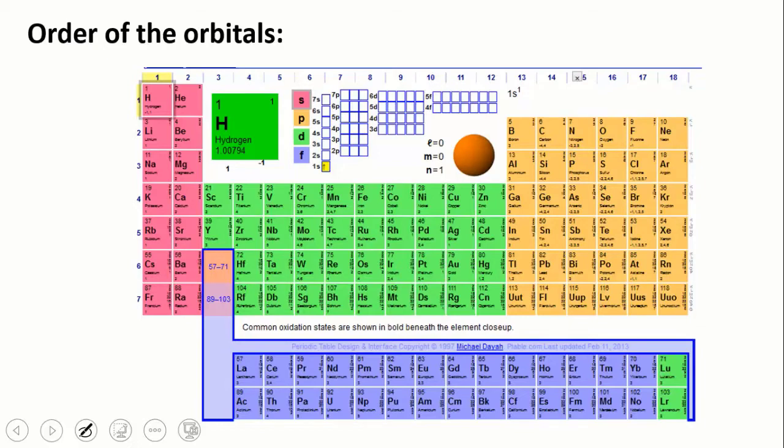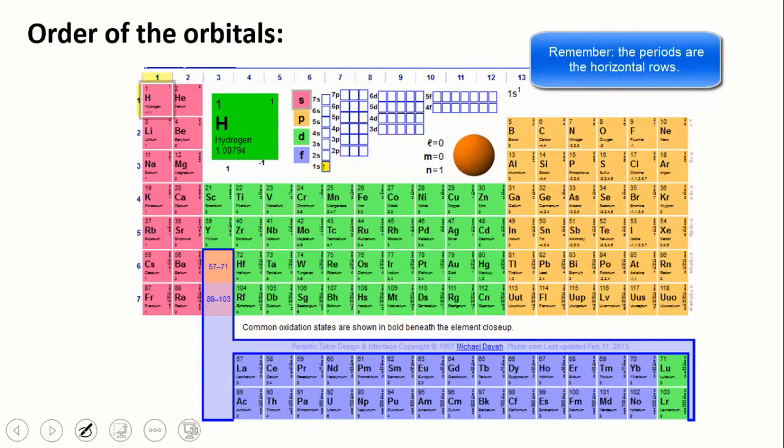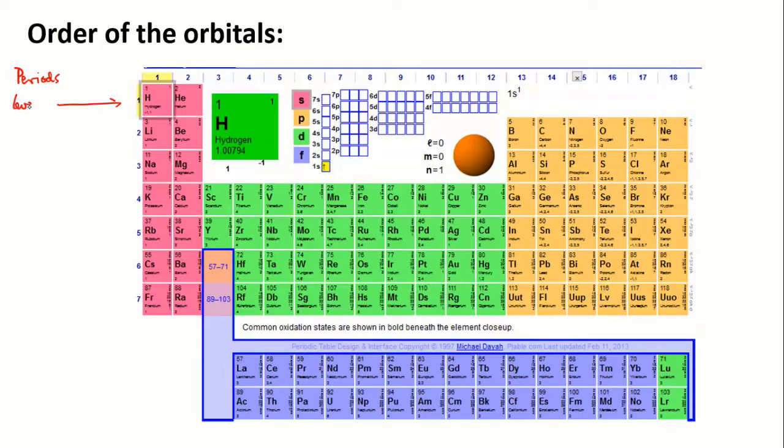First of all, recall that the periods in the periodic table tell you the energy level. So hydrogen and helium have their electrons in level 1. Lithium and beryllium reach up to level 2. When you get up to sodium and magnesium and so on, they're in level 3 and so on.